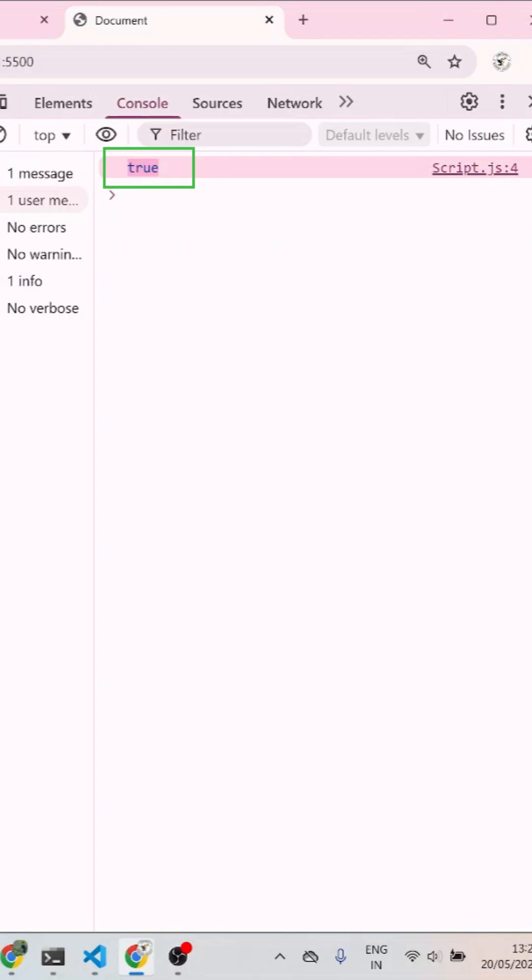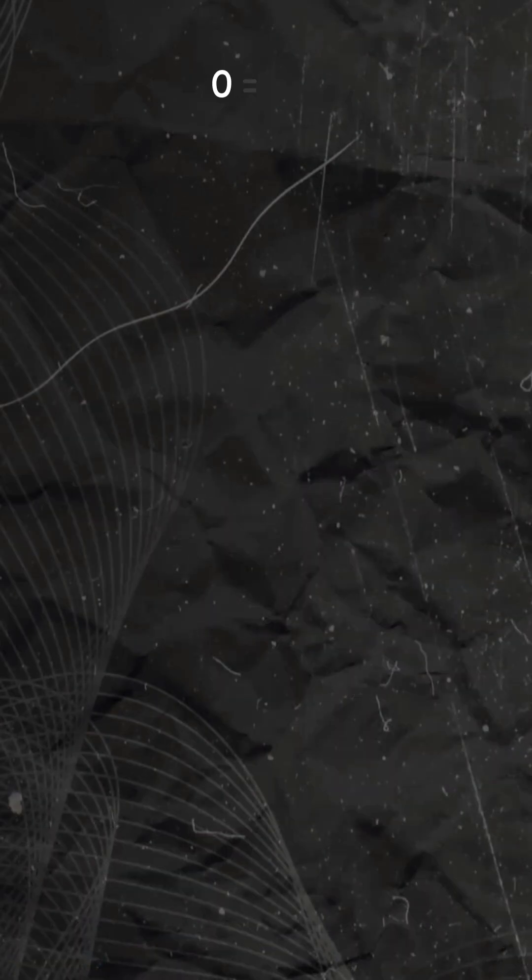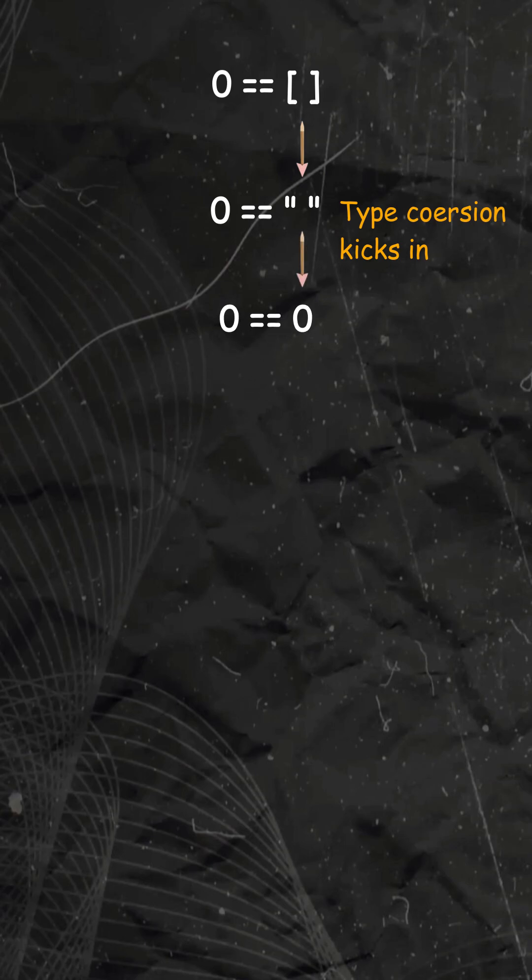Here we get true and this is because when we use loose equality in JavaScript it converts both sides before comparing. So empty array becomes empty string and eventually is converted to 0 and 0 is anyway 0. So when we compare loosely 0 to 0 we get true.